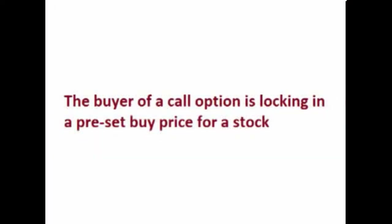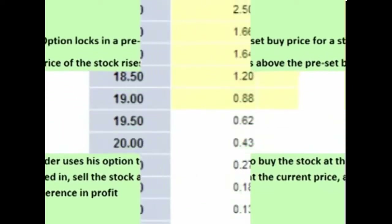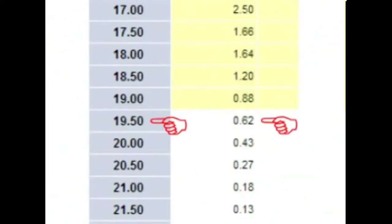A call option locks in a preset buy price for an asset. By buying call options on SLV, the trader is locking in a preset buy price. If the price of SLV should rise above the locked-in buy price, the trader can use his option to buy SLV at the price he locked in, sell it for the current higher price, and make the difference in profit. Let's look at the $19.50 February call option contract.